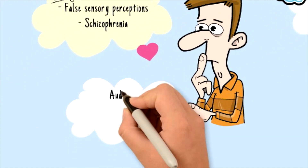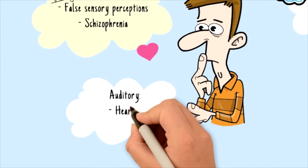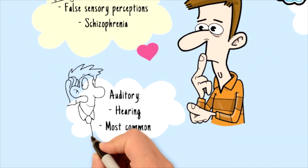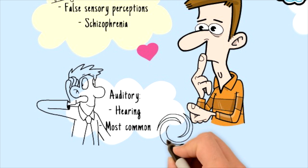The first type of hallucination is auditory hallucination. It's the most common type of hallucination and is related to the hearing of the person. What happens is that the person hears voices or sounds that are not there.